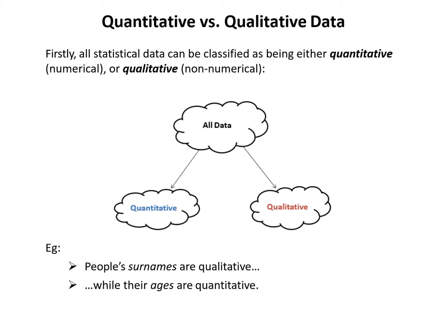The first way we can classify statistical data is to split it into quantitative versus qualitative. All data can be broken down into either quantitative or qualitative. Quantitative data is basically numbers — anything in numerical form — whereas qualitative data is non-numerical. For example, a list of people's surnames would be qualitative because it's made of strings of letters, not numerical. However, the same people's ages would be quantitative data because those are numerical values.